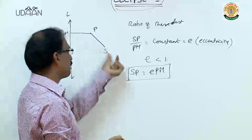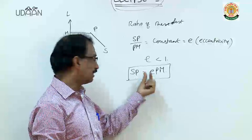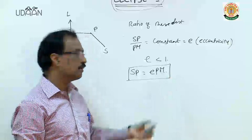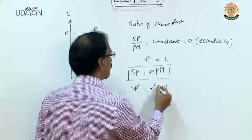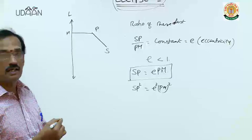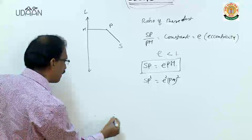So now, if you know any fixed point and fixed line, we will be able to form the equation of ellipse if E is less than 1, by using the formula SP = E·PM, or SP² = E²·PM².